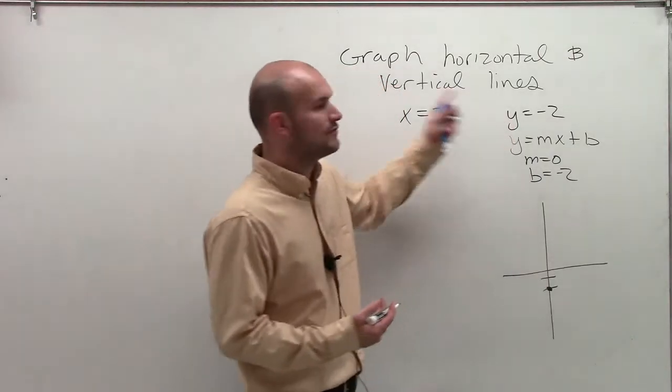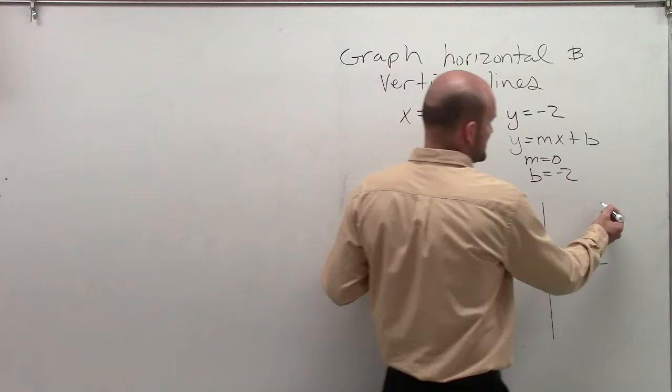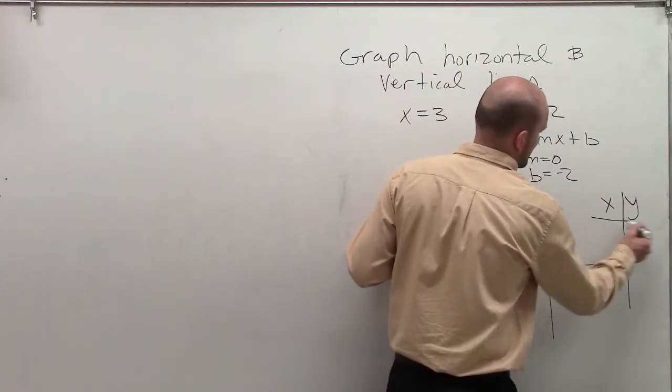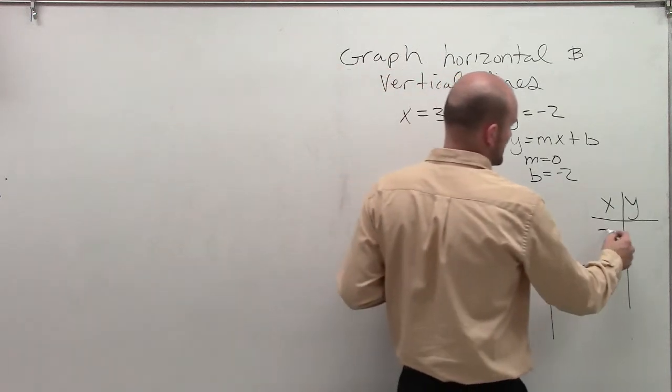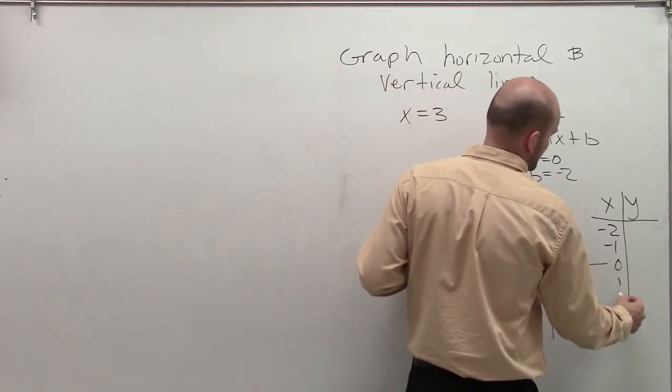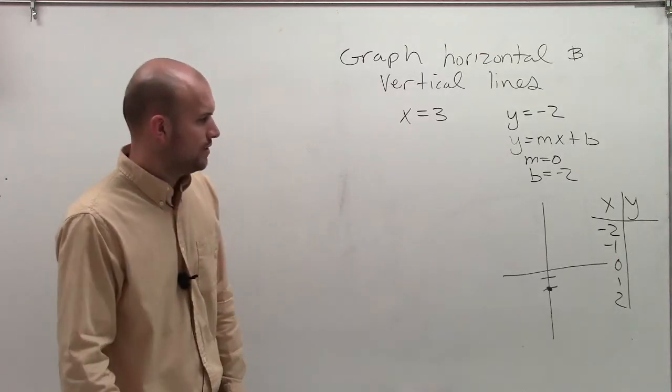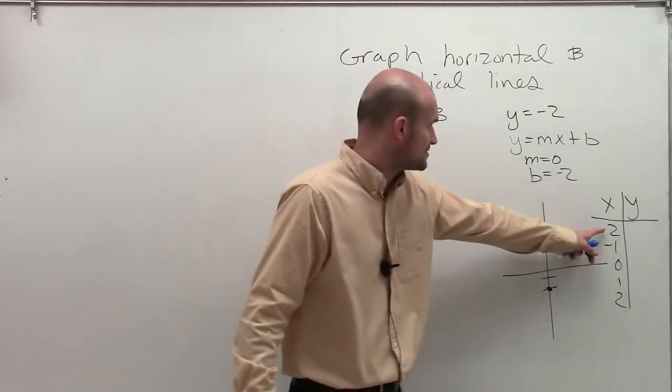So what we like to do when having vertical and horizontal lines, the best way I like to do this is create a table of values. So usually some table values can just be some easy ones. Negative two, negative one, zero, one, and two. So let's look at when x equals negative two.